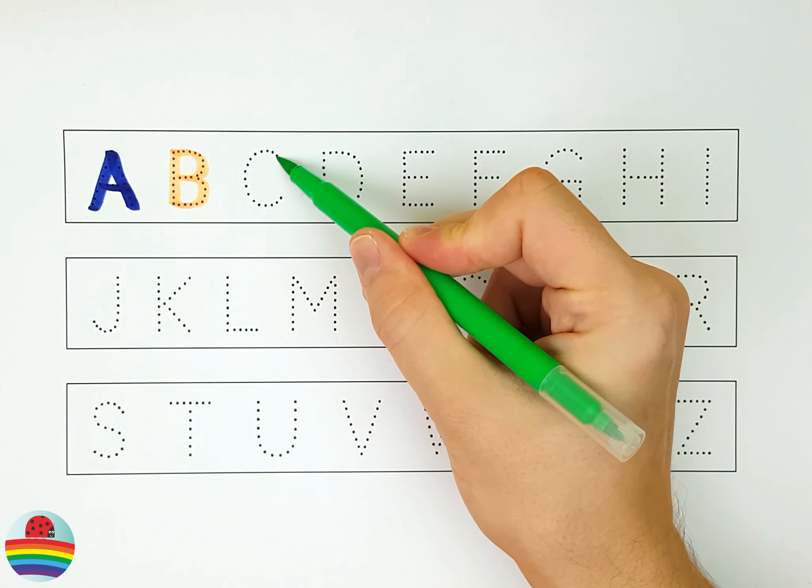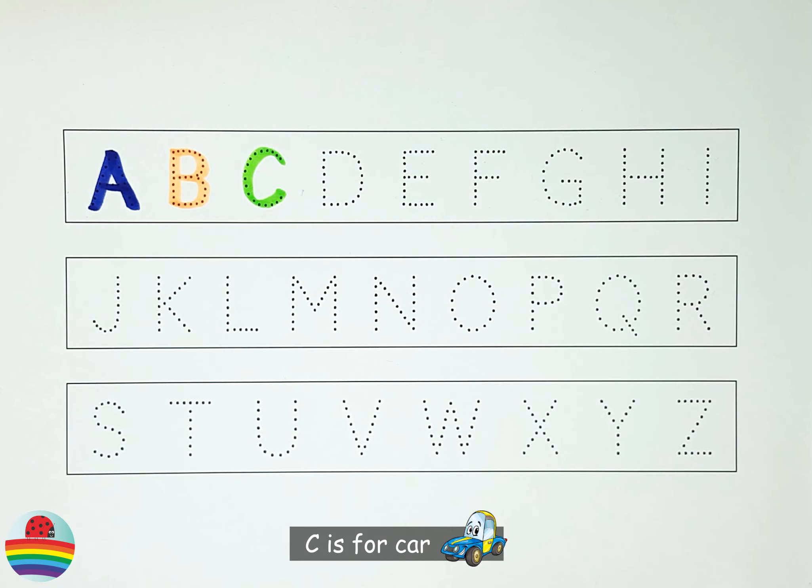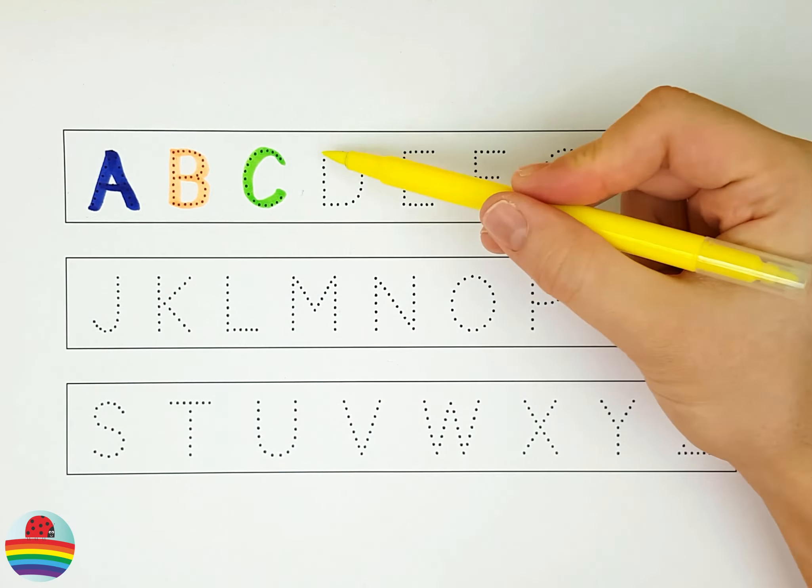A. A is for apple. B. B is for book. C. C is for car.